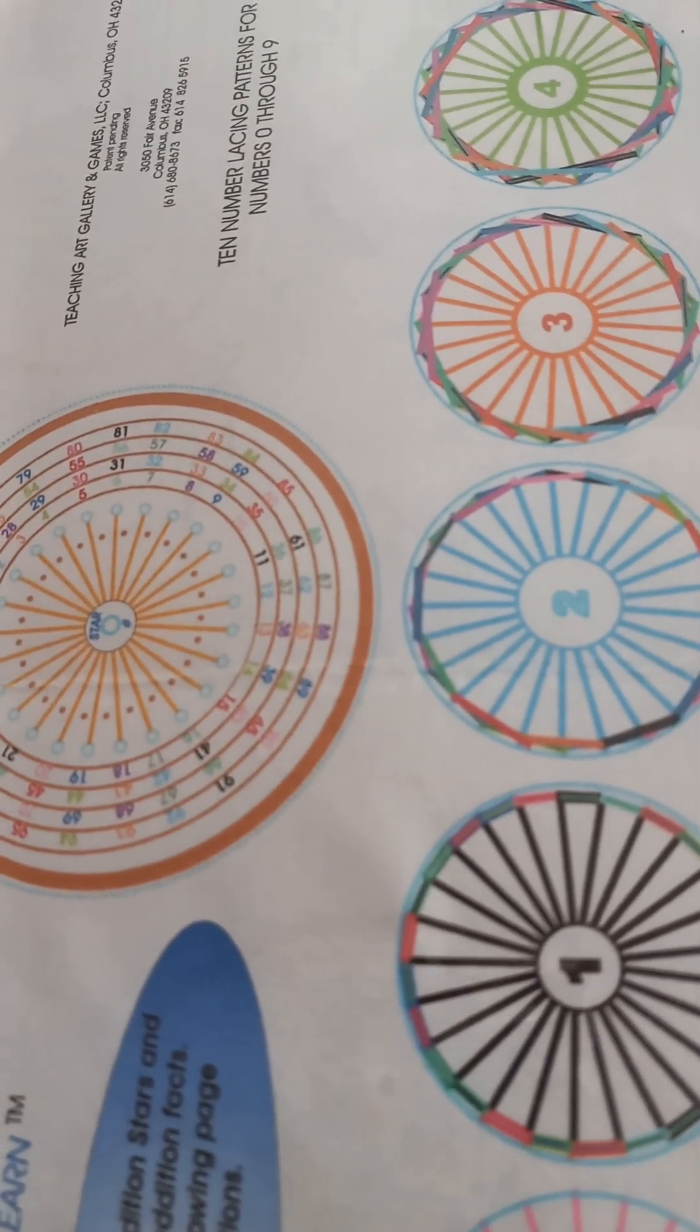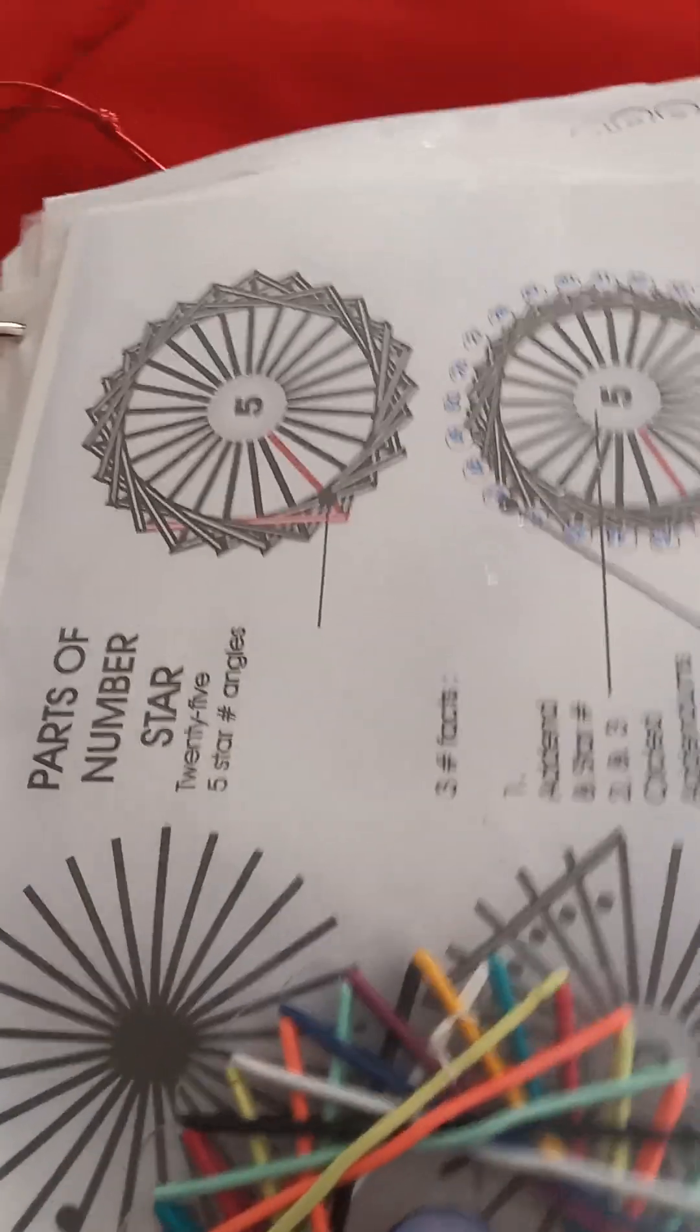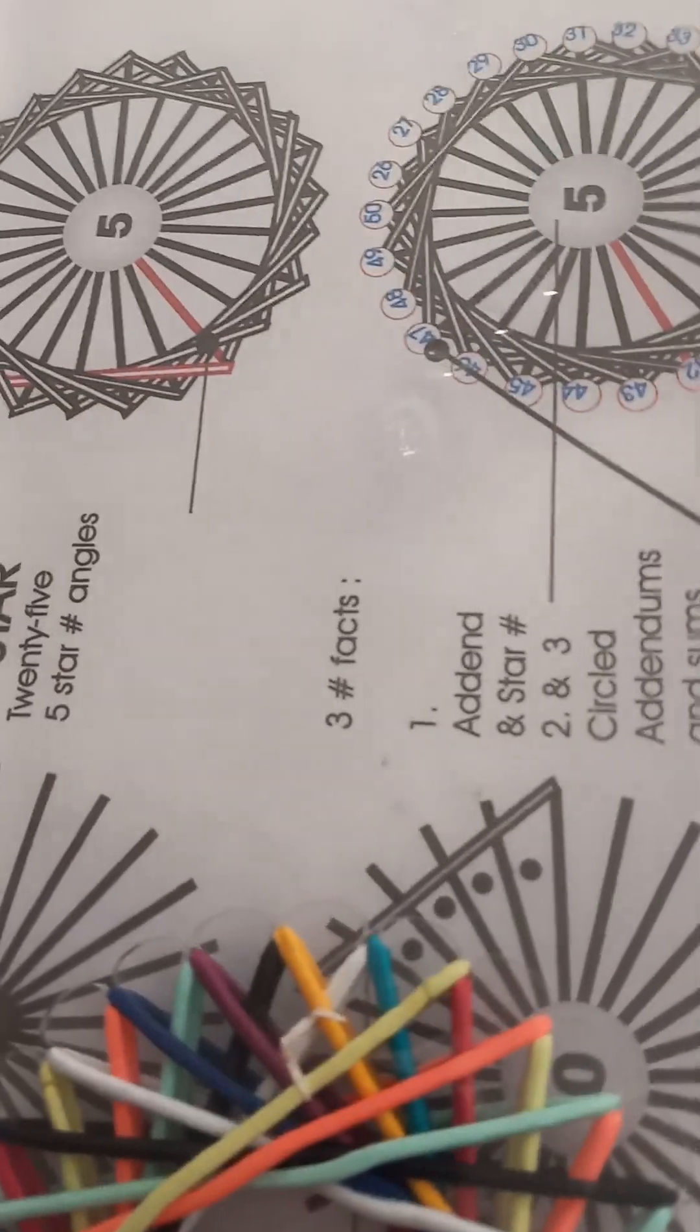Year in, year out, we start all over again with a concentric circle. But time, time is on a spiral. Time is on a spiral.